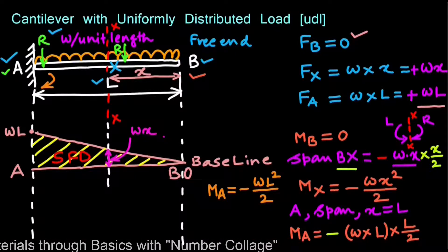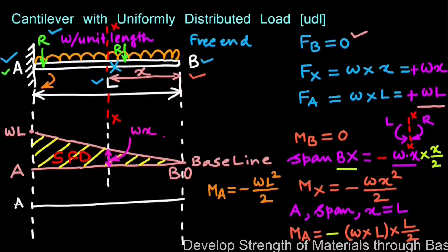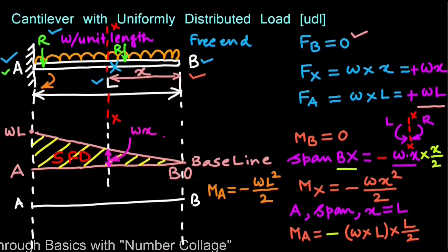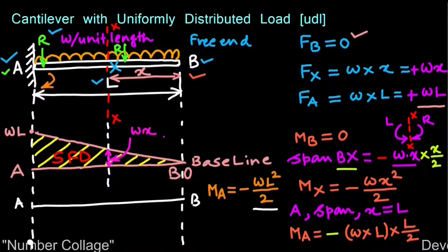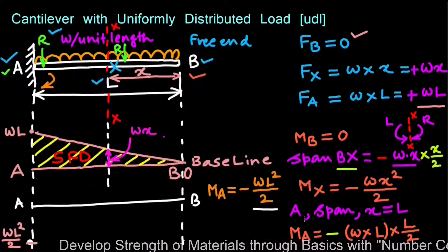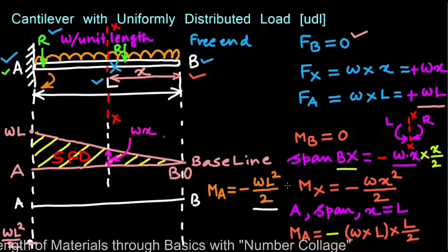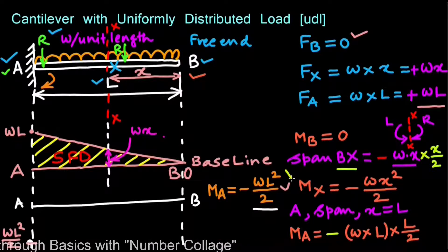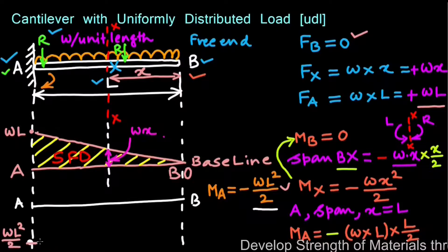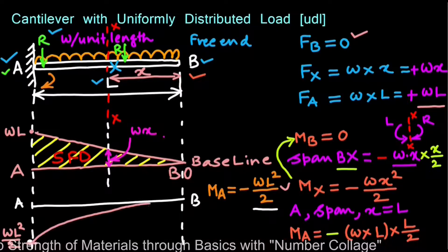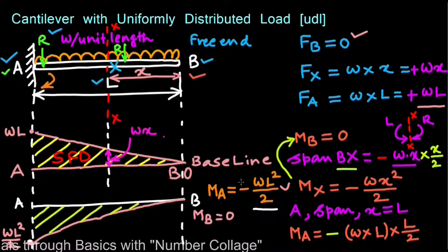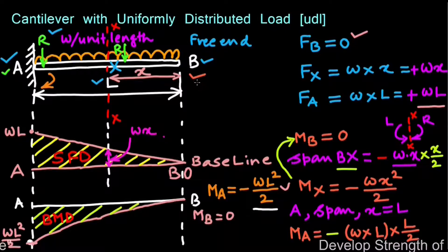Since the bending moment values are negative we draw a baseline AB below which we plot the bending moment diagram. The bending moment at point A is maximum at WL²/2. Since it is a uniformly distributed load, the bending moment reduces from this maximum value to MB equals 0 following a parabola, starting from WL²/2 and reaching 0 at point B. This parabolic shape is the bending moment diagram of this UDL cantilever beam.